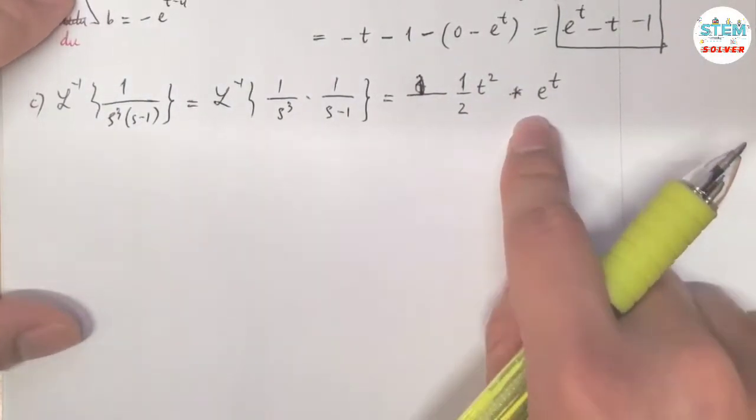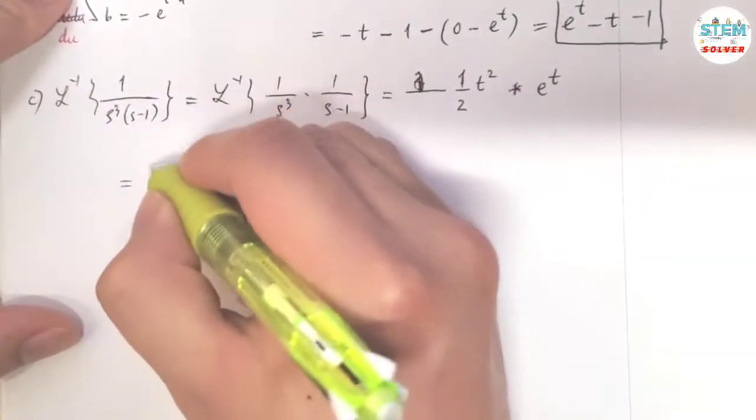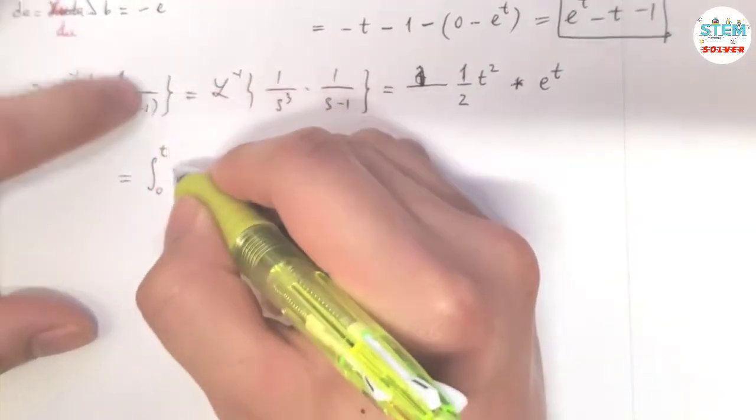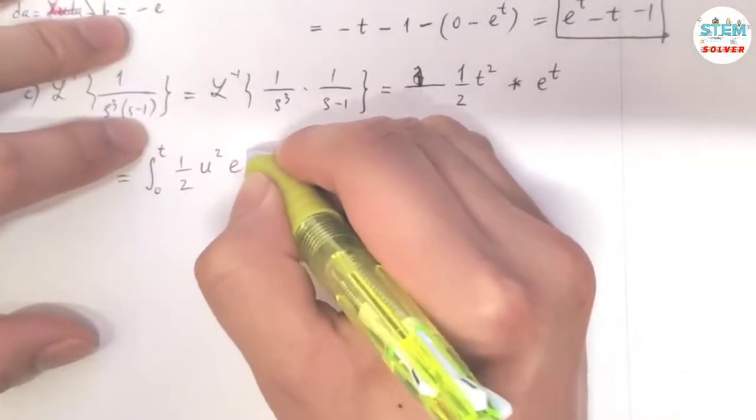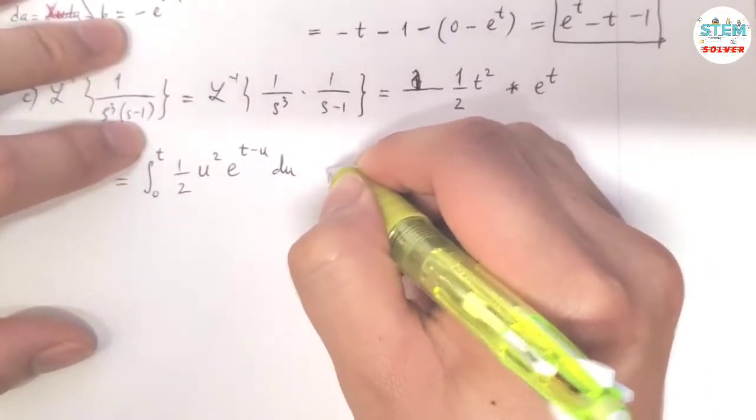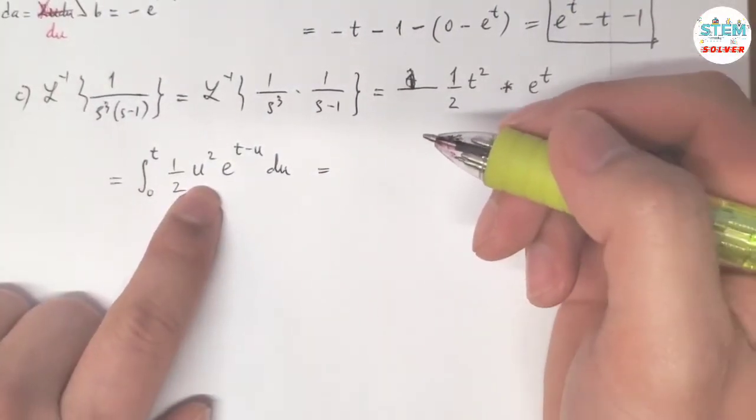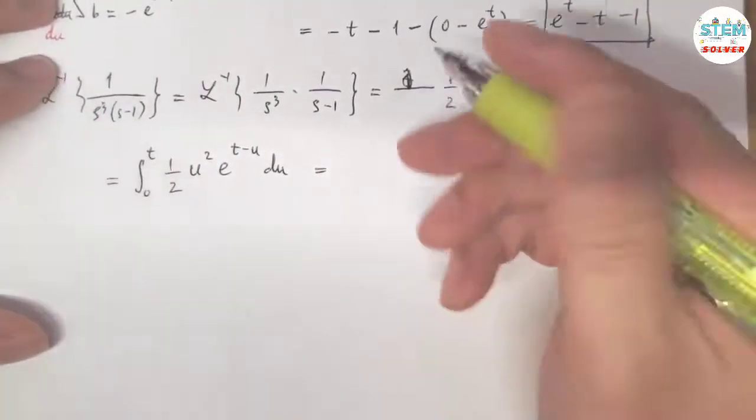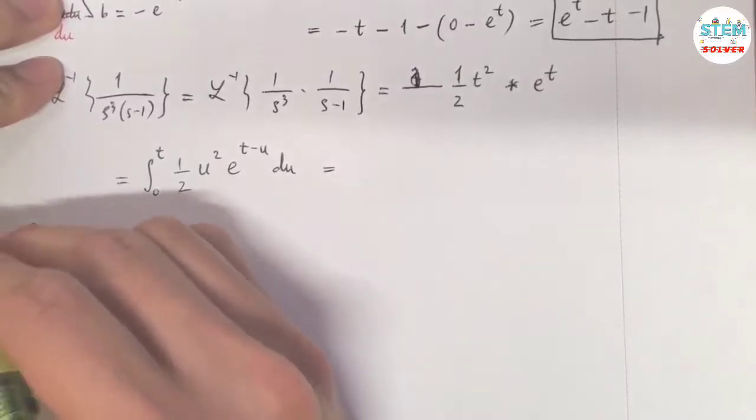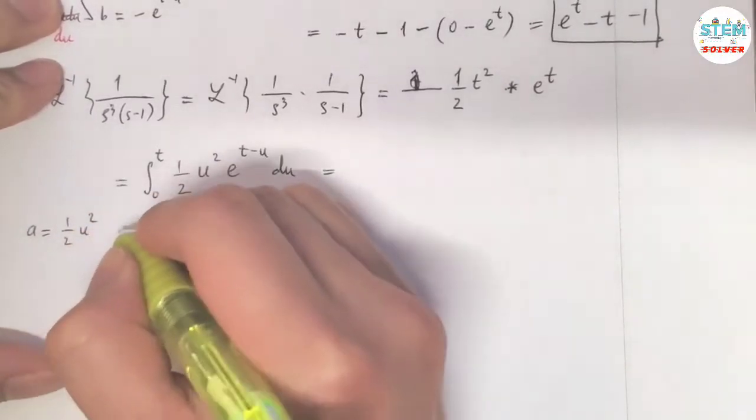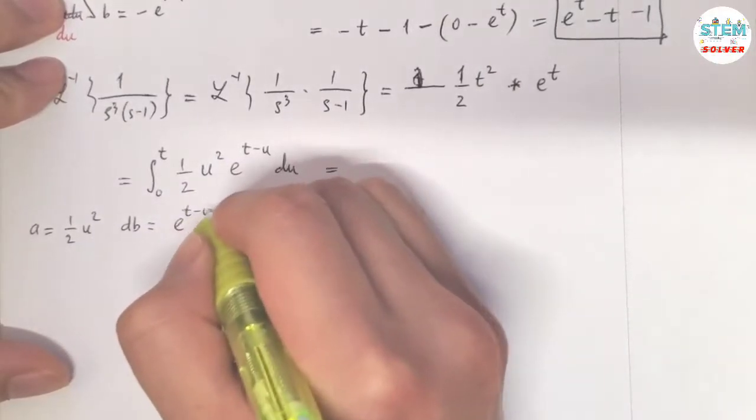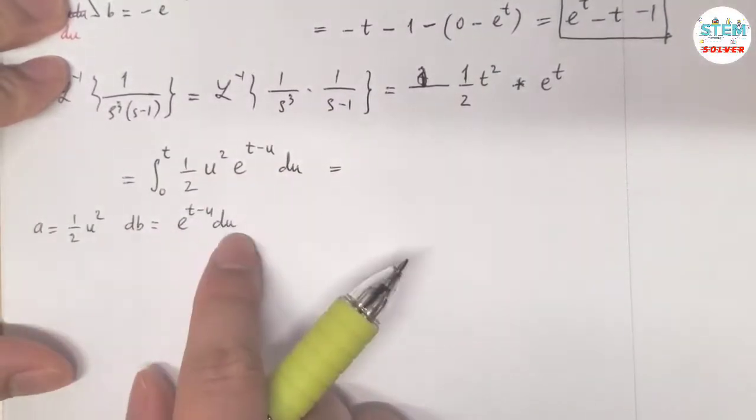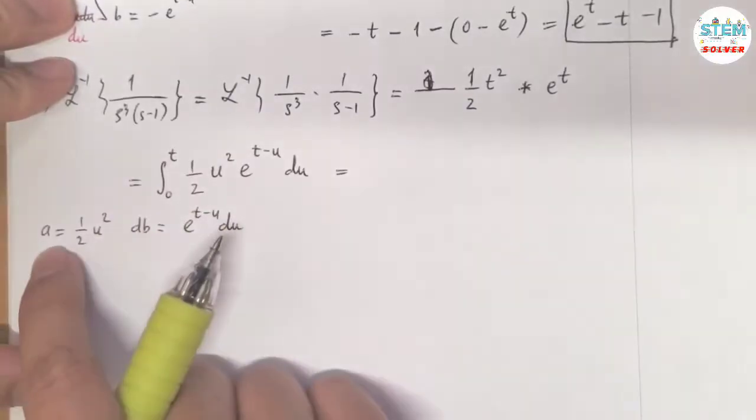Now, this can be written as in terms of the integral. So 1 half u squared times e to the t minus u du. Alright. Now for this one, we have to use the integration by parts method. So let a equals 1 half u squared, and db equals e to the t minus u du. So you can use whatever letter you like.